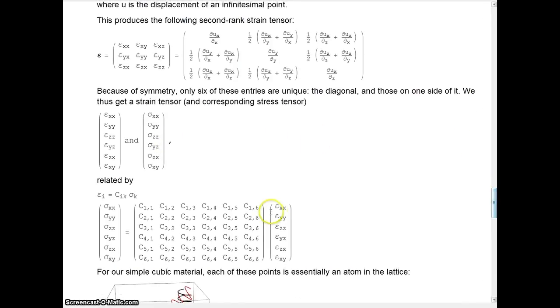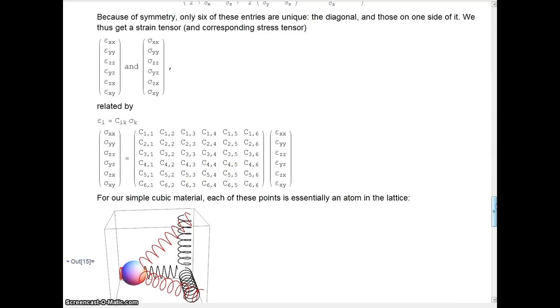But, because we're using Hooke's Law, these are springs, and this is a simple cubic lattice. So each atom is only attached to six of its neighbors, and so it's not going to have any weird stresses. This is where I'm probably wrong, but at this point, we are going to do this.